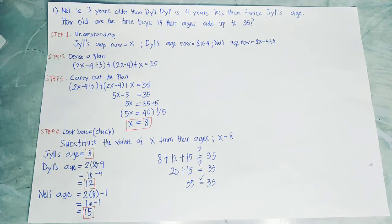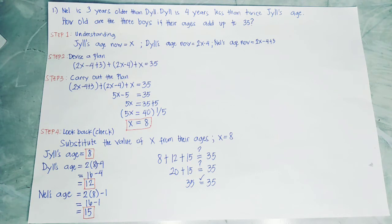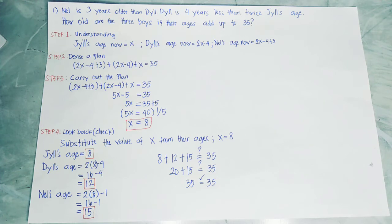Negative 4 plus 3 equals negative 1, and 2 times 8 equals 16, so 16 minus 1 equals 15. Let's check if it will add up to 35: Jill's age is 8, Anil's age is 12, and Anil's age is 15. 8 plus 12 equals 20, plus 15 equals 35. The final answers for their ages are 8, 12, and 15, and it is correct because it adds up to 35.